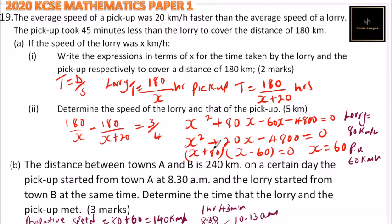The other method is, you can say x, where they met, x over 80.